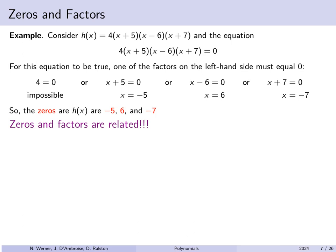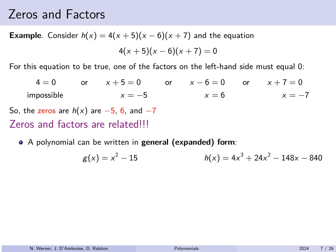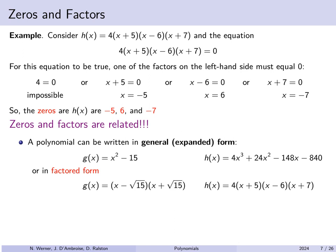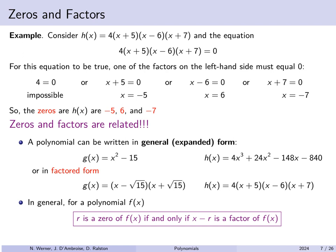Zeros of a polynomial are directly related to factors: if r is a zero of the polynomial, then (x − r) is a factor, and vice versa. For example, g(x) = x² − 15 factors as (x − √15)(x + √15). And h(x) = 4(x+5)(x−6)(x+7) expands to 4x³ + 24x² − 148x − 840.